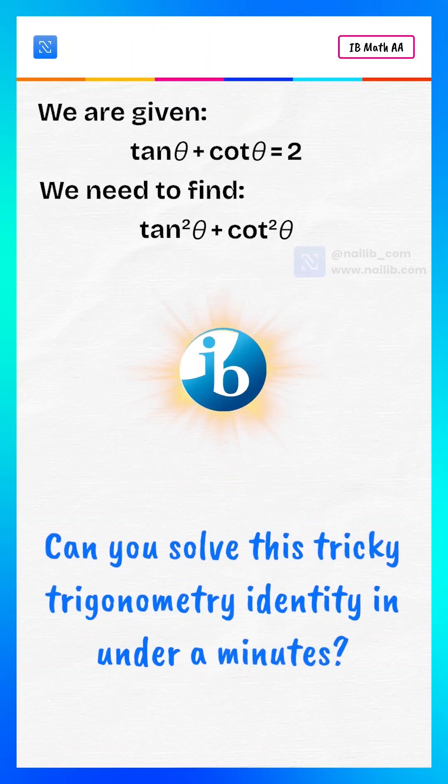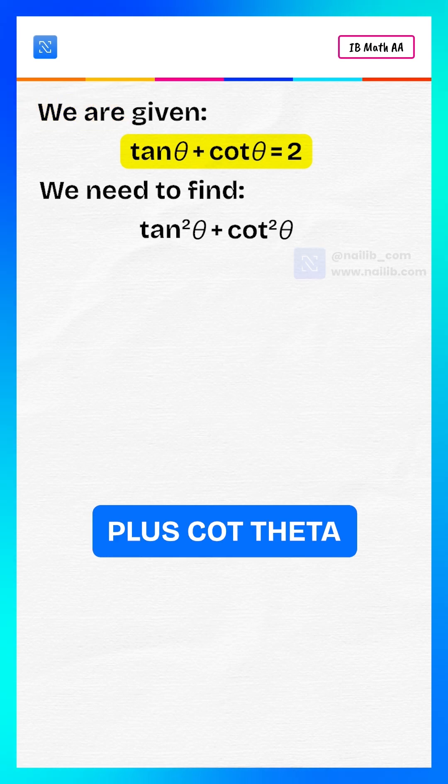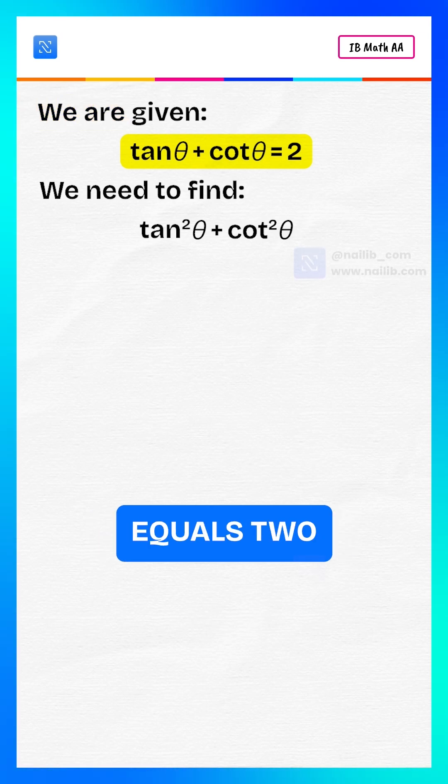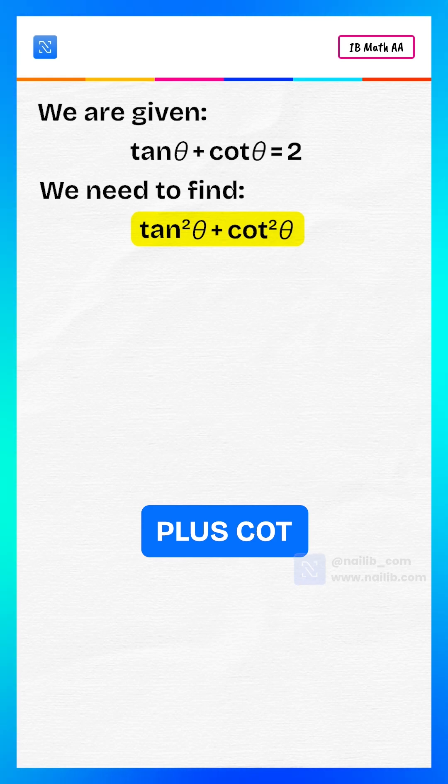Can you solve this tricky trigonometry identity in under a minute? We are given tan theta plus cot theta equals 2, and we're asked to find tan squared theta plus cot squared theta.